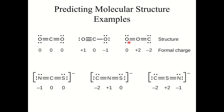Looking at formal charges: in the first CO2 structure, all three atoms have a formal charge of zero. In the second structure, carbon is zero but one oxygen is plus one and the other is minus one. In the third structure, one oxygen is zero, the other oxygen is plus two, and carbon is minus two. The first structure is clearly the best because it minimizes the formal charge values.